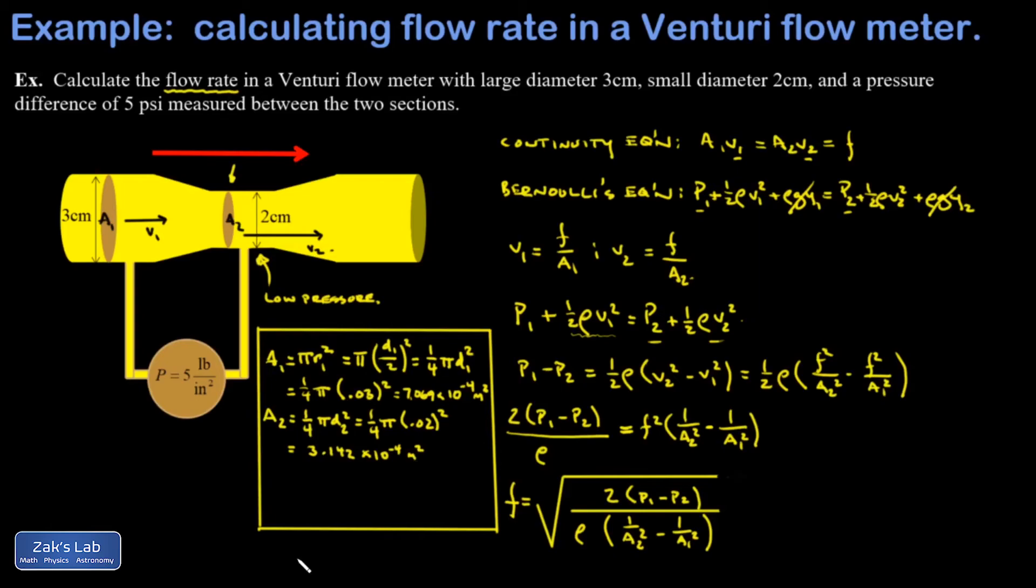And then P1 minus P2—again, I was careful to make sure that came out to a positive number because I know that the low-speed side of this thing is the high-pressure side. P1 minus P2 was 5 psi, and I need to remember the conversion to pascals: that's 6,895 pascals for every pound per square inch, and I get 34,475 pascals pressure difference.